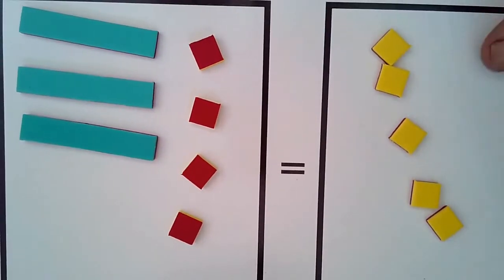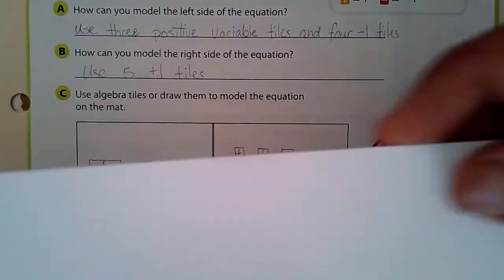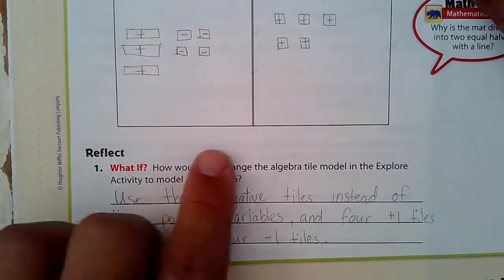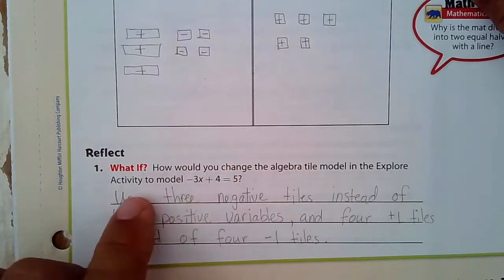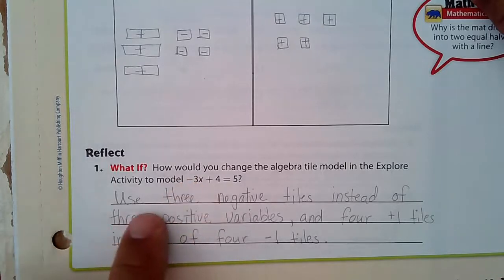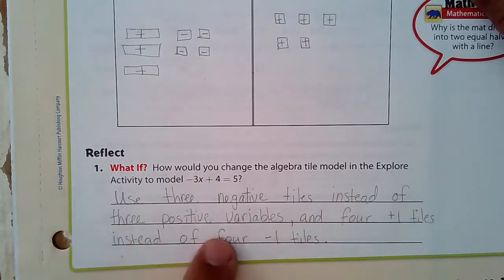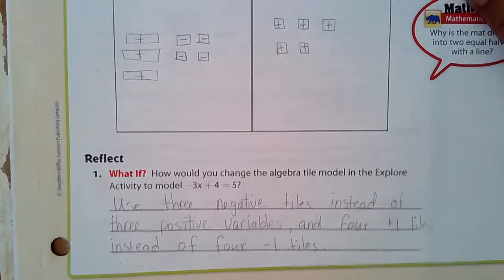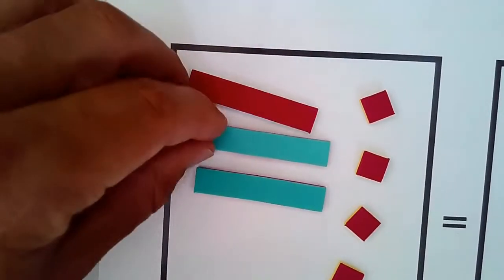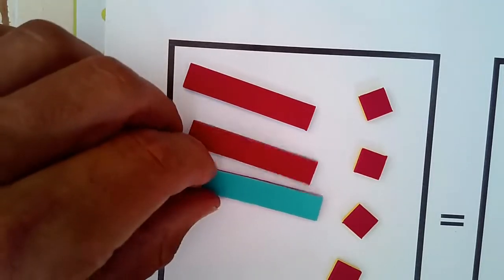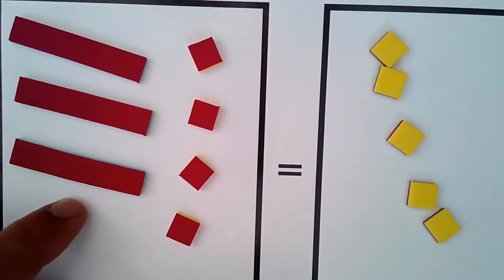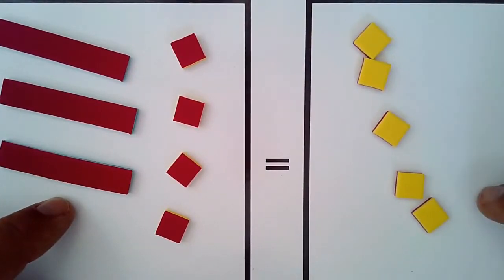Now, we're not going to be solving this though. We're just modeling it at this point. So how would you change the algebra tile model to model negative 3x instead of positive 3x? We'd use three negative tiles instead of three positive variable tiles. So all I'd have to do is switch this over to negative, and now it's negative 3x minus 4 equals 5.